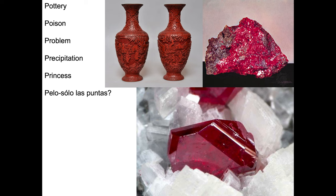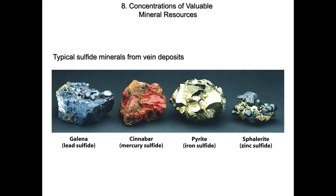Modern human studies of toxicity don't generally involve bone samples — people are much more willing to give you a hair sample than a bone sample. So we're going to try to calibrate the mercury poisoning in the Ice Princess to the people of Portugal who were making pottery for trade around Europe 5,000 years ago. When we talk about sulfide minerals coming from vein deposits, we're usually talking about things like galena (a lead sulfide), cinnabar (mercury sulfide), pyrite (an iron sulfide), and sphalerite (zinc sulfide).